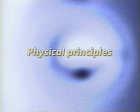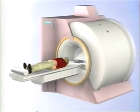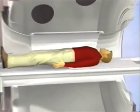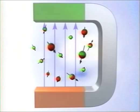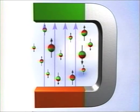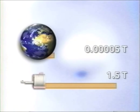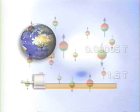Physical principles. The patient is positioned in a powerful, homogeneous, constant magnetic field generated by a cylindrical magnet. The strength of the magnetic field is indicated in units of Tesla and today typically ranges between 0.2 and 3 Tesla. In comparison, the Earth's magnetic field is approximately 0.00005 Tesla. The static main magnetic field of a 1.5 Tesla magnet is approximately 30,000 times stronger than the Earth's magnetic field.